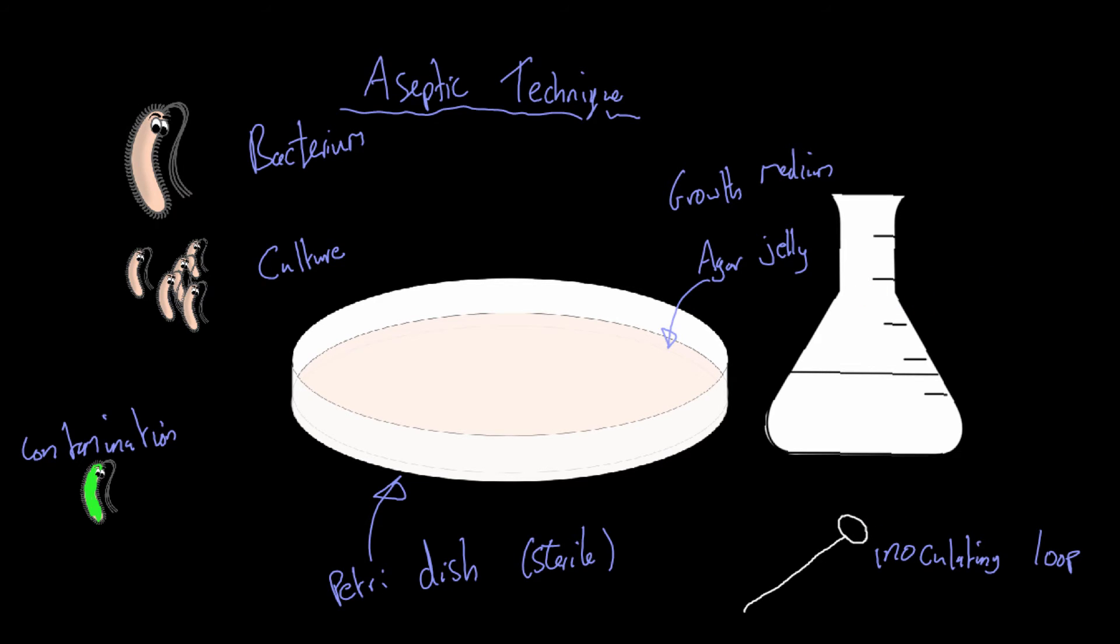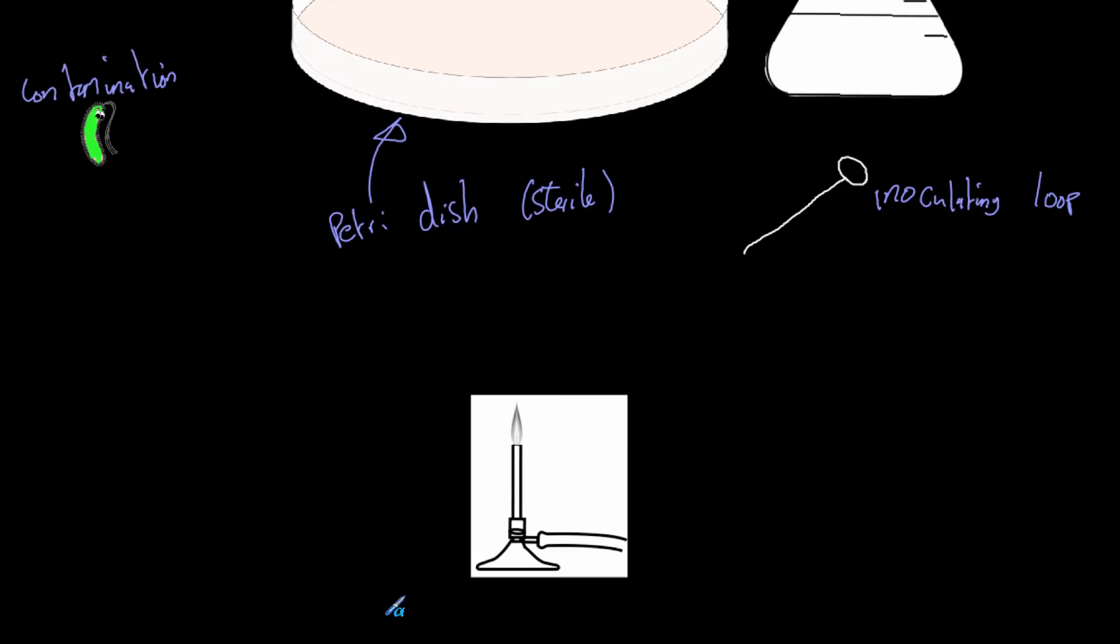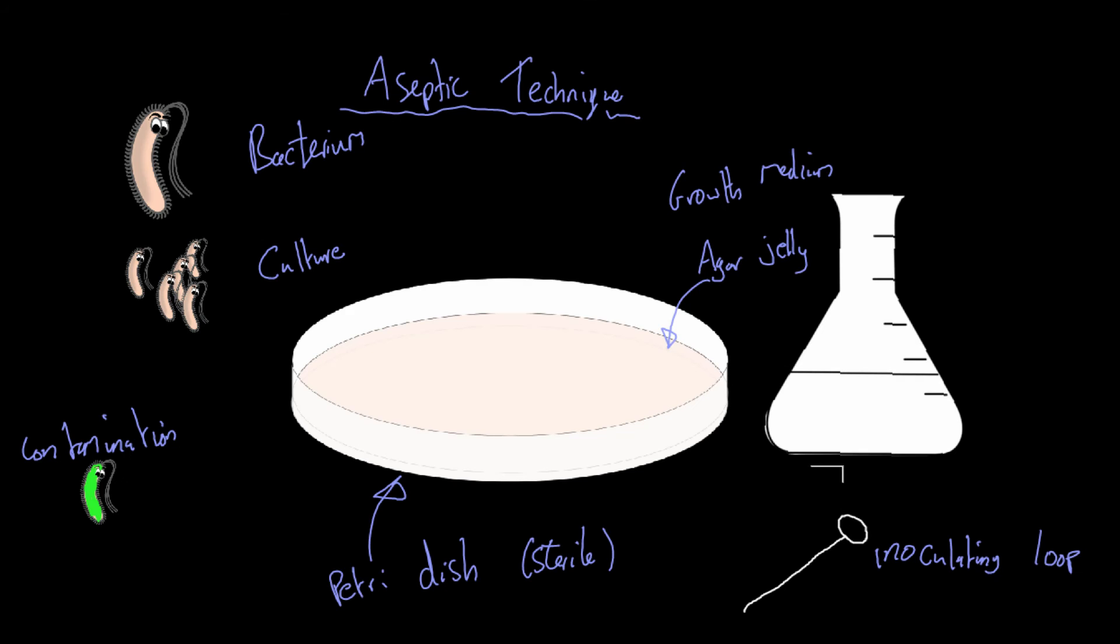The way we're going to do that is by using one of these things, which is known as a Bunsen burner.